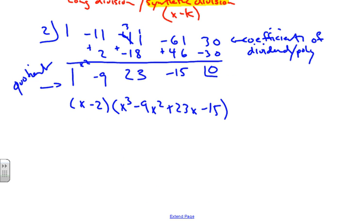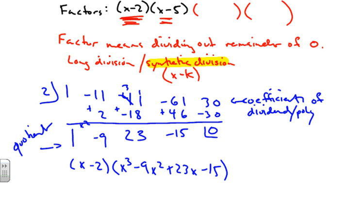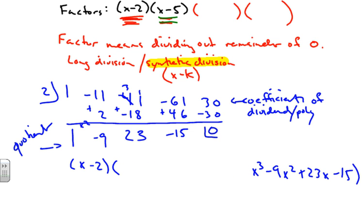Now I want to find additional factors, so I need to factor out this new quotient which is a cubic. I'm going to take my next factor, which is this right here, and I'm going to use synthetic division again. I'm now going to divide this expression by 5, which is the zero or the k value there.